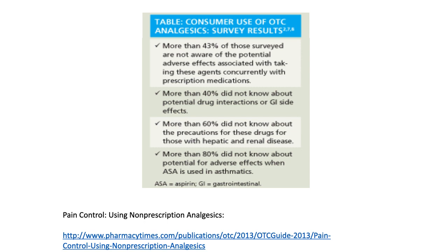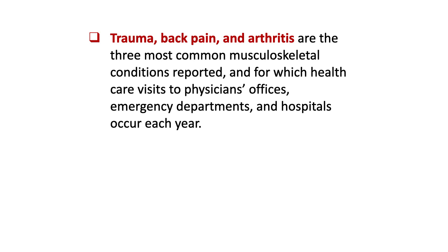There are also studies associating the use of ibuprofen with worsening hypertension, still related to its effect on the kidneys. Additionally, one of the most common side effects of NSAIDs that every pharmacist knows is GI irritation, which can be addressed by taking medications after meals. Trauma, back pain, and arthritis are the three most common musculoskeletal conditions reported, for which healthcare visits to physicians' offices, emergency departments, and hospitals occur each year.